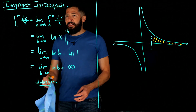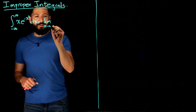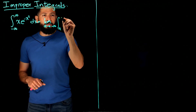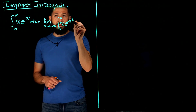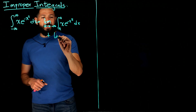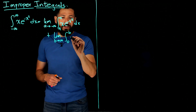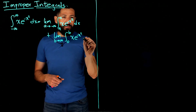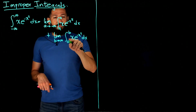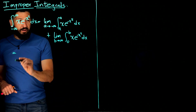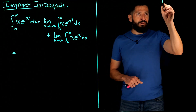Let's do another type of integral — the integral from negative infinity to infinity of x times e to the negative x squared. The first thing you do is break it as the limit as A goes to negative infinity of the integral from A to 0, plus the limit as B goes to positive infinity of the integral from 0 to B. We pick 0 as the splitting point. We can then apply the fundamental theorem of calculus for each one, since from A to 0 and from 0 to B are each finite intervals.